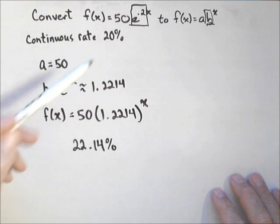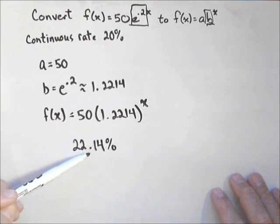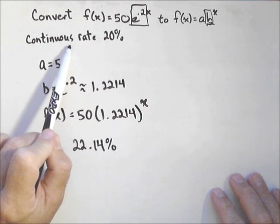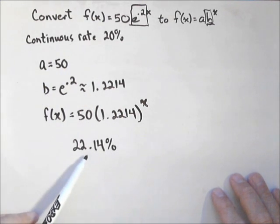And they're really close together. This is 20%, this is 22.14%, but because this is being compounded continuously, its annual rate is just slightly higher.